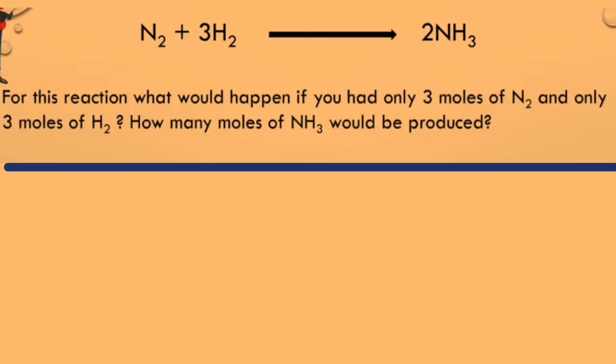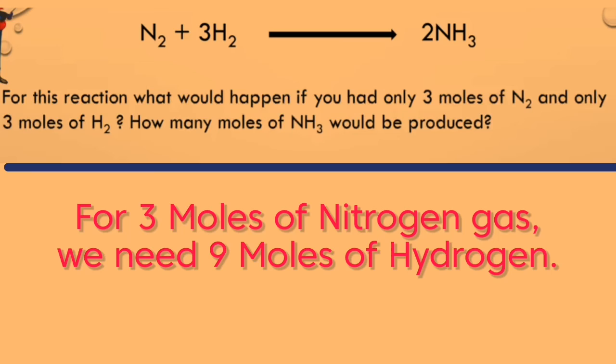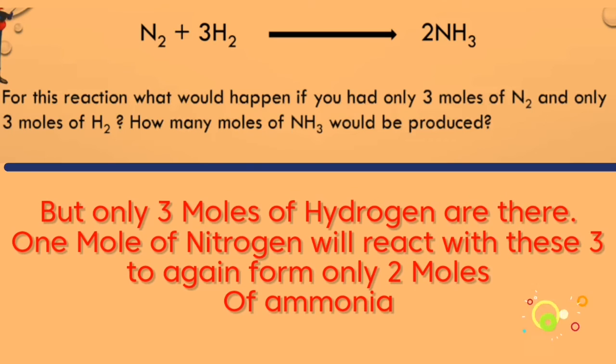But what if you had three moles of nitrogen gas and only three moles of hydrogen gas? How many moles of ammonia would be produced? If you had three moles of nitrogen gas to completely utilize them for a complete reaction, you would want nine moles of hydrogen gas. But here you have only three moles.